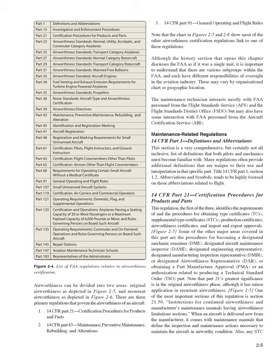Maintenance-Related Regulations: 14 CFR Part 1, Definitions and Abbreviations. This section is a very comprehensive, but certainly not all-inclusive, list of definitions that both pilots and mechanics must become familiar with. Many regulations often provide additional definitions unique to their use in that specific part. Title 14 CFR Part 1, Section 1.2, Abbreviations and Symbols, tends to be highly focused on abbreviations related to flight.